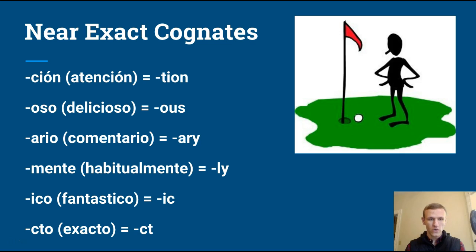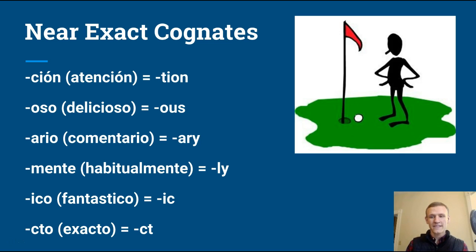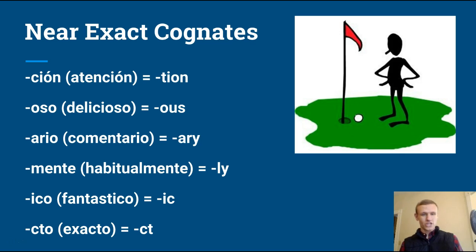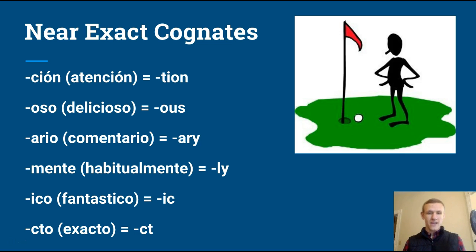For example, I've got cognates with these endings: -ción, -oso, -ario, -mente, -ico, and -cto. So you get: Atención, Delicioso, Comentario, Habitualmente, Fantástico, and Exacto. They map to: Atención — attention, with the T-I-O-N ending; -oso means -ous, so delicious; -ario maps to -ary, so commentary; and so on. You can read through that list I've spelled out here. These are really important because you can start to pick up on the patterns of the language and use them to infer what other words mean.